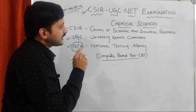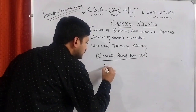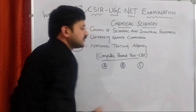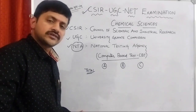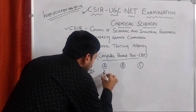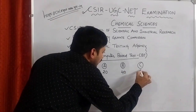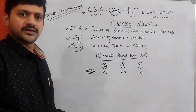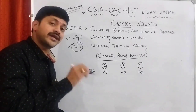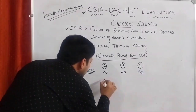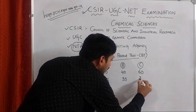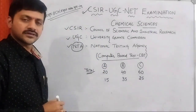If you see this particular NET examination pattern, we have three parts: Part A, Part B, and Part C. The total number of questions in Part A is 20, Part B is 40, and Part C is 60. The number of questions to be attempted by the aspirant will be: from Part A, 15; from Part B, 35; and from Part C, 25.